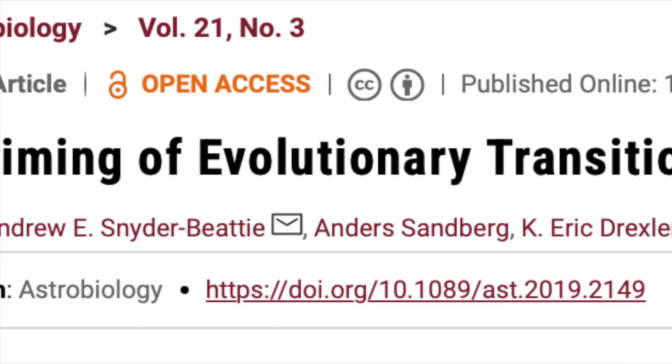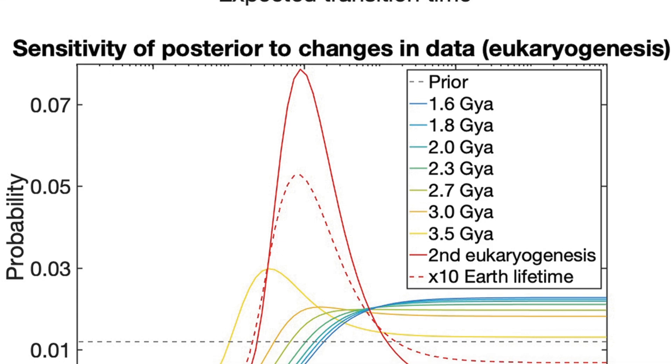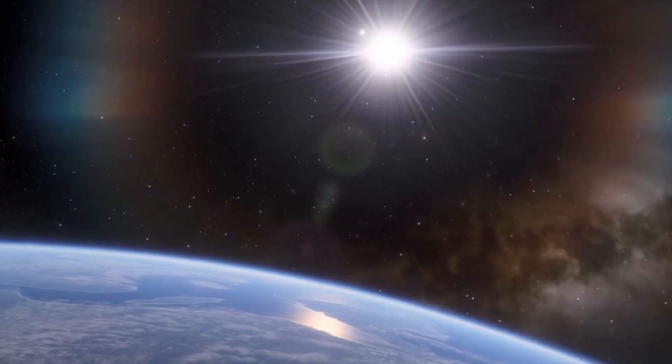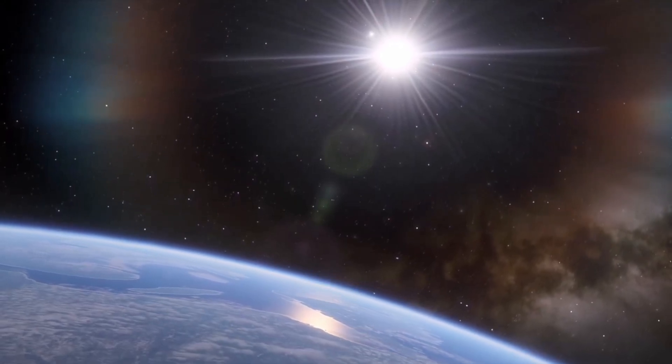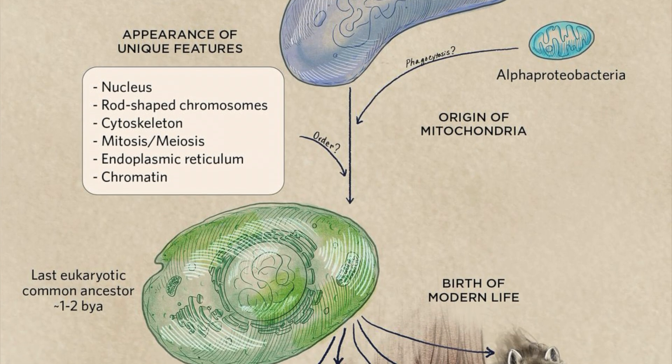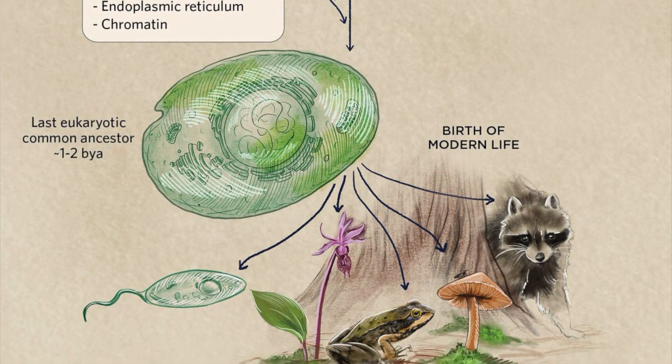In fact, some astrobiologists have concluded that eukaryogenesis may be so rare that the average amount of time it would take to occur likely exceeds the current age of the universe. This makes it a prime candidate for the solution to the Fermi paradox, as without the transition from prokaryotic to eukaryotic life, bacteria and single-celled organisms never could have evolved into the complex life forms that exist today.